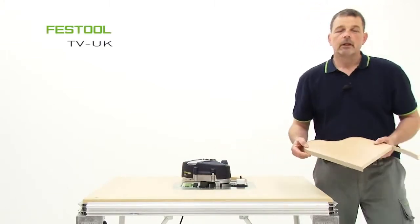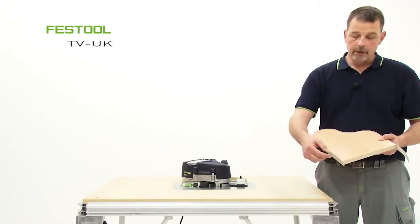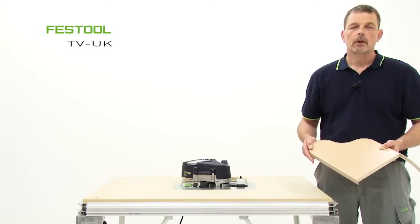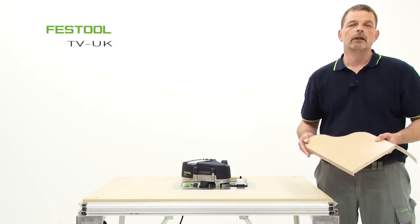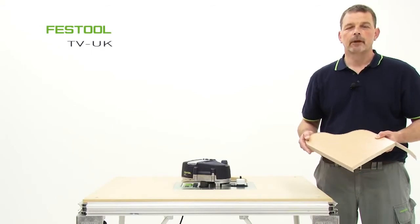So now the edging is applied and it means that we can use one of the Festool routers, trimming routers, to take the lipping all the way down flush with the surface. So I hope this helped your understanding of the Conturo KA65 and I'll see you again next time. Thank you.